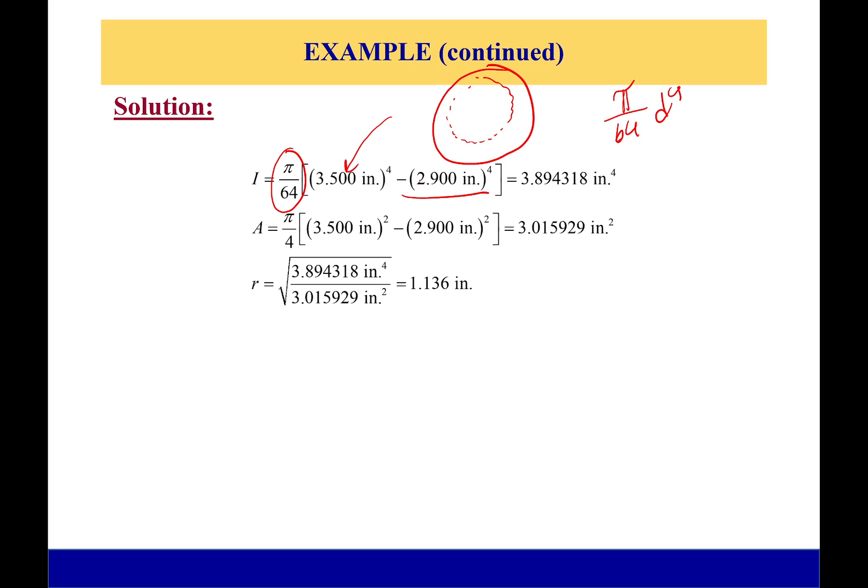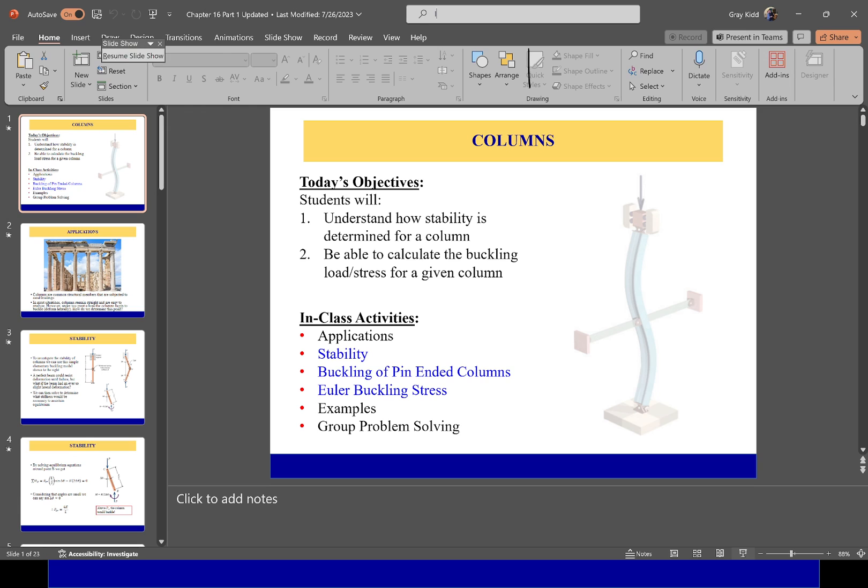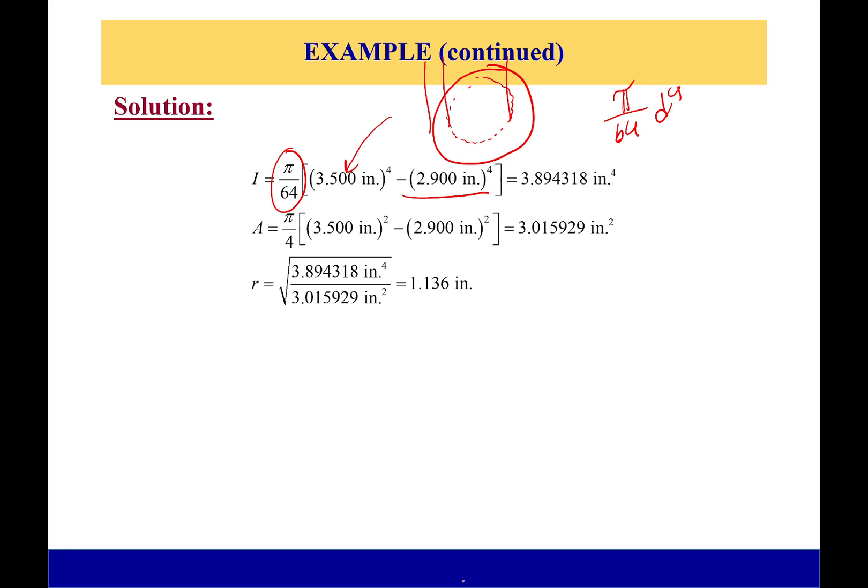Where the 2.9 comes from: that is because we have the wall thickness being subtracted from both sides. So I have 0.3 right here and 0.3 right there, so 0.6 from 3.5 is 2.9. What's the next step?